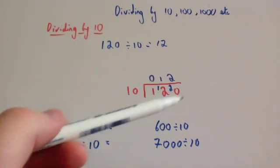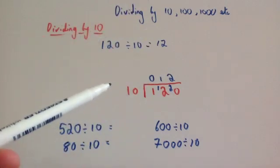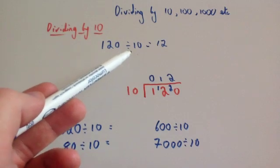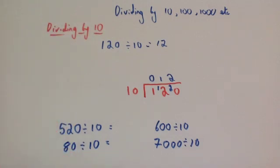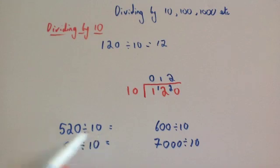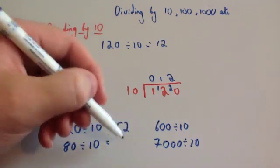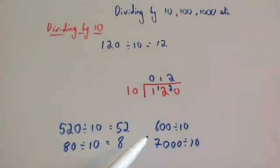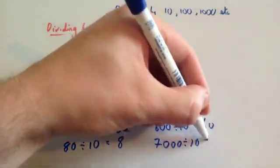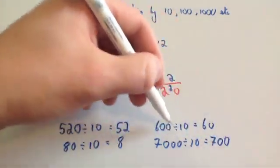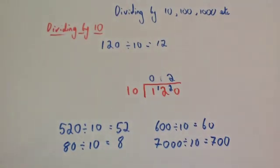Now you can do this for every single division by 10 or 100,000 if you wish, but there's a quick way of doing it. If it ends in a zero and you're dividing by 10, you can just take one of the zeros off. That's quite a crude way of talking about it, but it just gives you the right answer very quickly. So 520 divided by 10 equals 52. 80 divided by 10 equals 8. 600 divided by 10 equals 60. And 7,000 divided by 10 equals 700. Just taking off a zero from all the numbers you're dividing by 10.